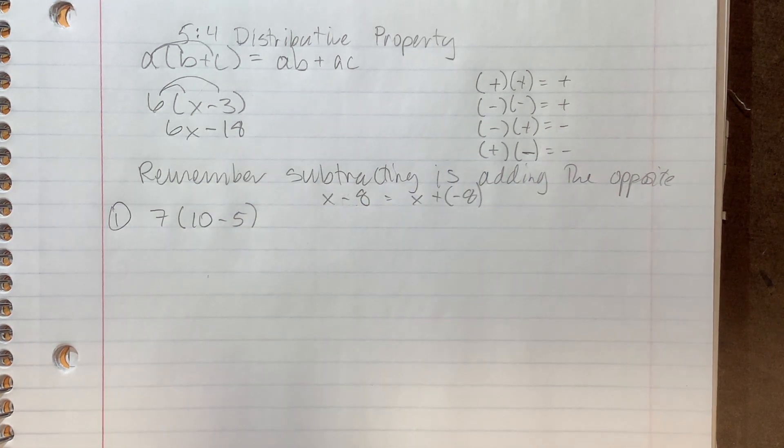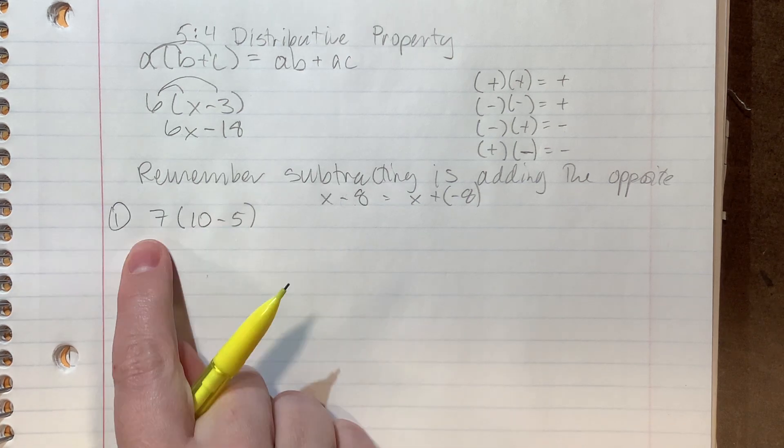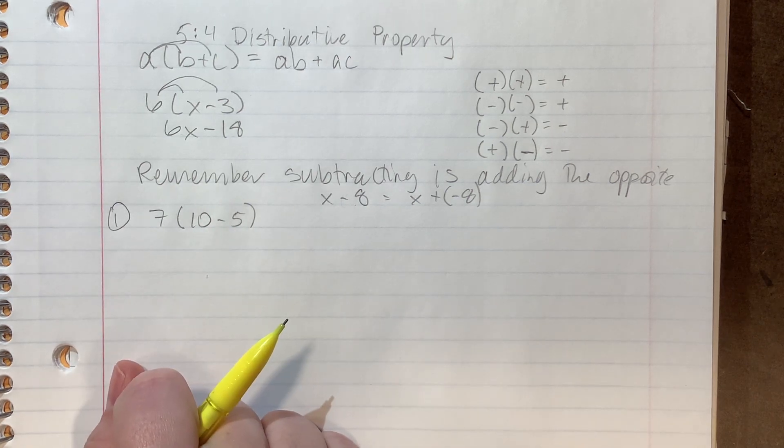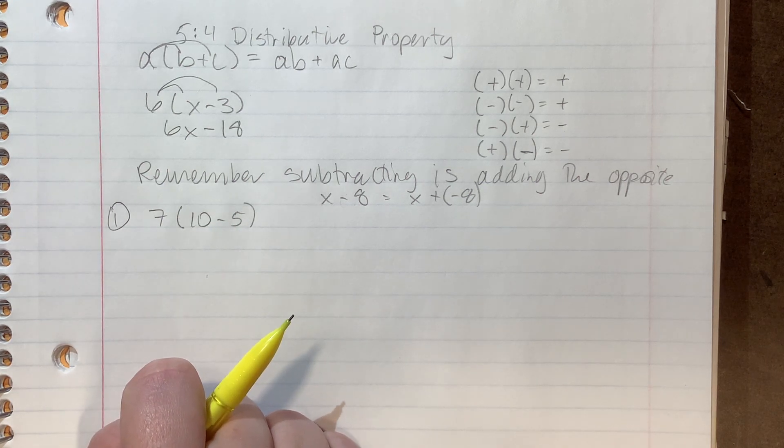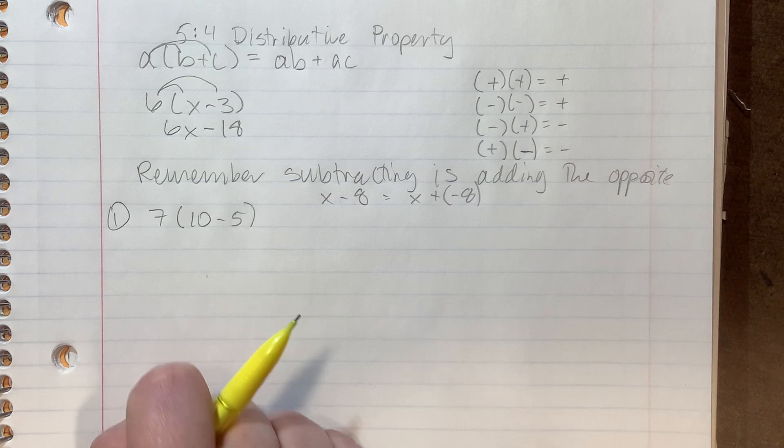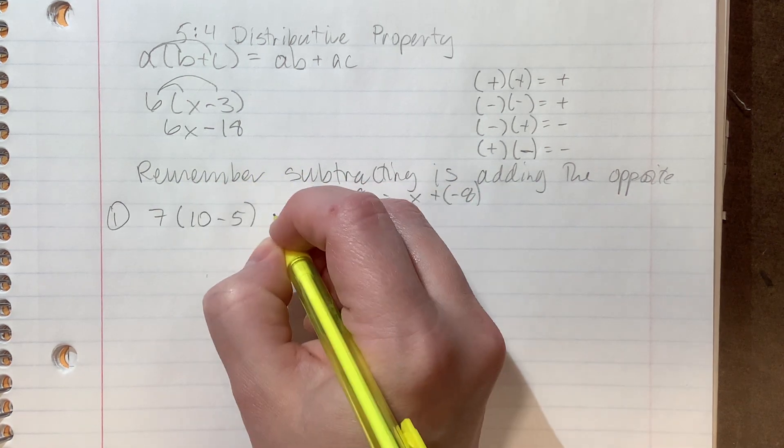Now in the real world and in order of operations, we would do this 10 minus five first. And if we did that, we'd get five and then five times seven is 35. Done and done. But because we are practicing the distributive property, I want you to practice distributing the number through.